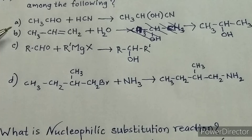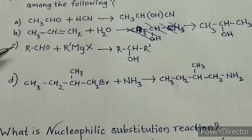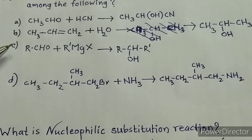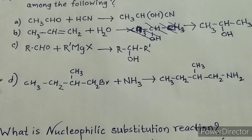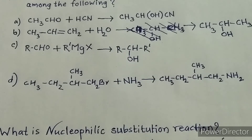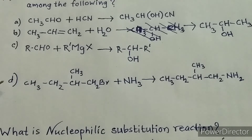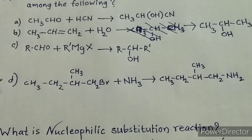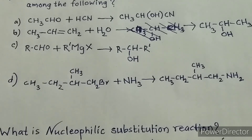In reactions A, B, and C, nothing is removed from the reactants, so they are not nucleophilic substitution reactions. In reaction D, bromine is displaced by the nucleophile NH2. Therefore, reaction D is a nucleophilic substitution reaction.